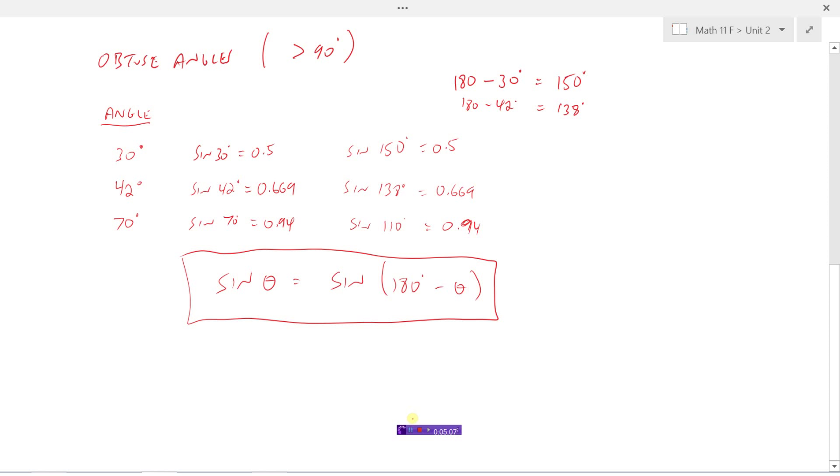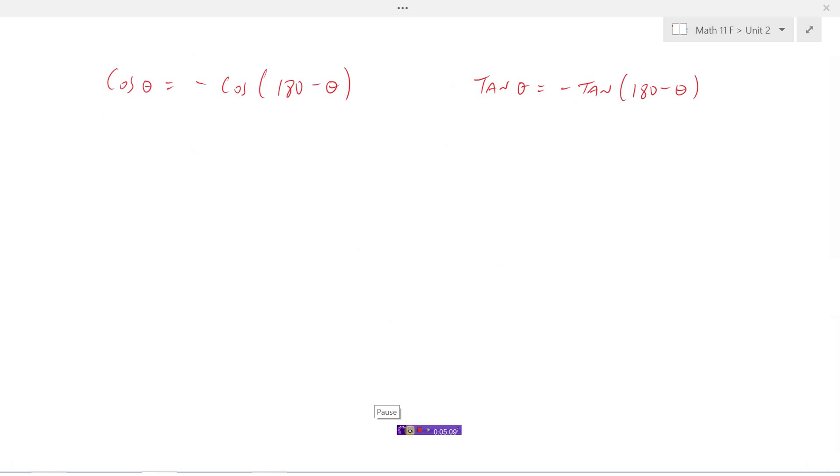Let's look at a couple other identities. It turns out that for cosine and for tangent, it's almost the same. The cosine of an angle will equal the exact same thing as the cosine of 180 minus the angle, but it'll come out with the opposite sign. Same thing with tangent. Let's just check this. We'll do 32 degrees and 80 degrees.